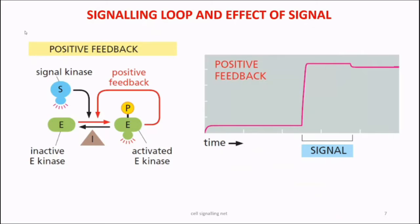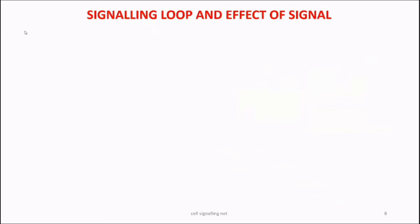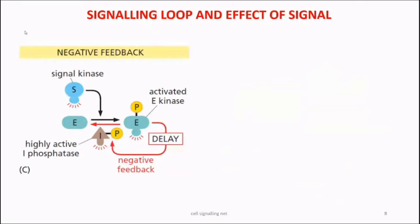On the graph, the X axis represents time and the Y axis represents the extent of the response generated. After the signal is applied, the graph rises, showing the response generated in the cell. Even after withdrawal of the signal, the response remains almost steady — this is characteristic of a positive feedback loop. Even after signal withdrawal, the altered cellular physiology does not fade away but remains stable for a certain period.